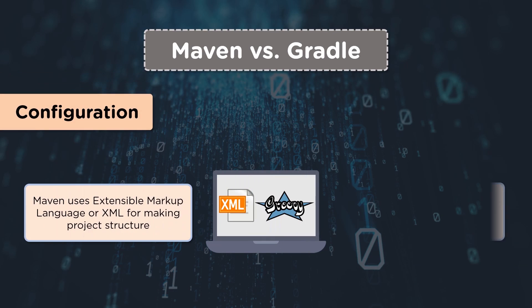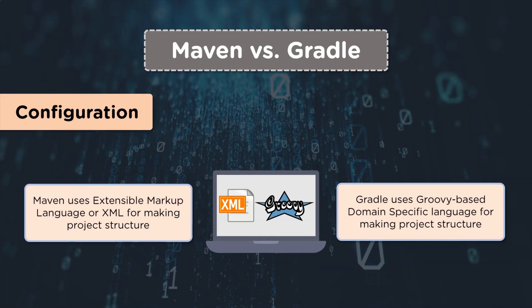The third pointer is configuration. Maven uses extensible markup language, or XML, for making the project structure. Maven uses an XML file for declaring the project and its dependencies. Whereas Gradle does not use an XML file for the declaration of project configuration — it uses Groovy based domain specific language for making the project structure.